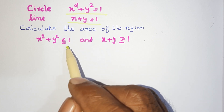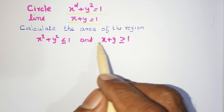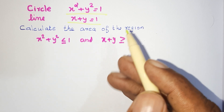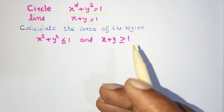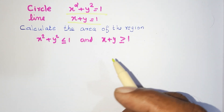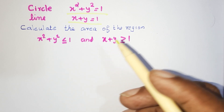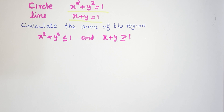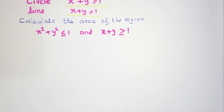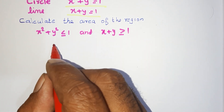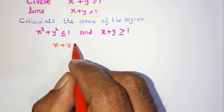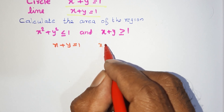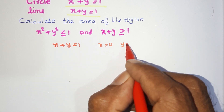This is a circle, this is a line. Greater than that, less than that — this is the region. The two lines define the area region. The circle and the line intersect, and we need the area of the common region.